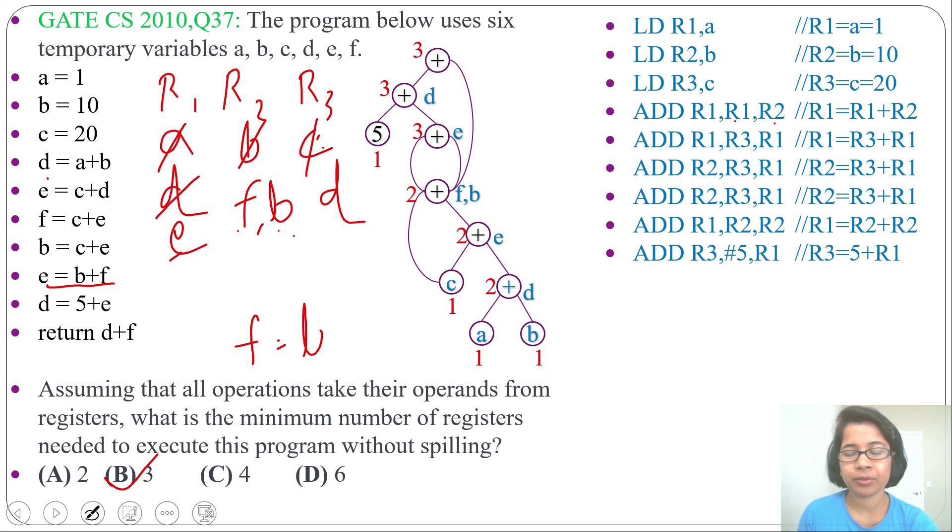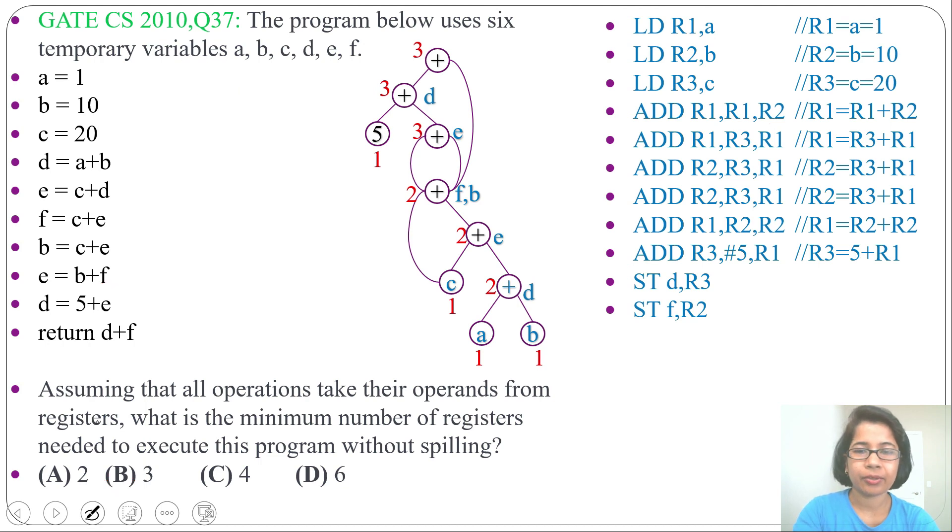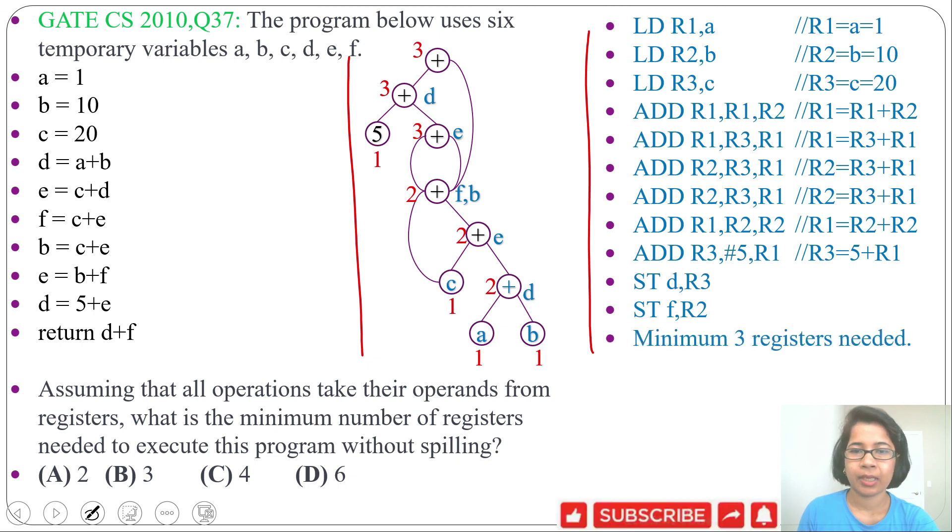Next we need to return D plus F. So we need to store D and F. Then we can do the addition. So store R3 content into D. And store R2 content into F. Either you can create the level expression tree. Or you can write the machine instruction. We require 3 registers. And there is also another way graph coloring algorithm. Whichever method you find easy, you just use that. So here answer is option B. It's 3. 3 registers required for writing machine instruction.